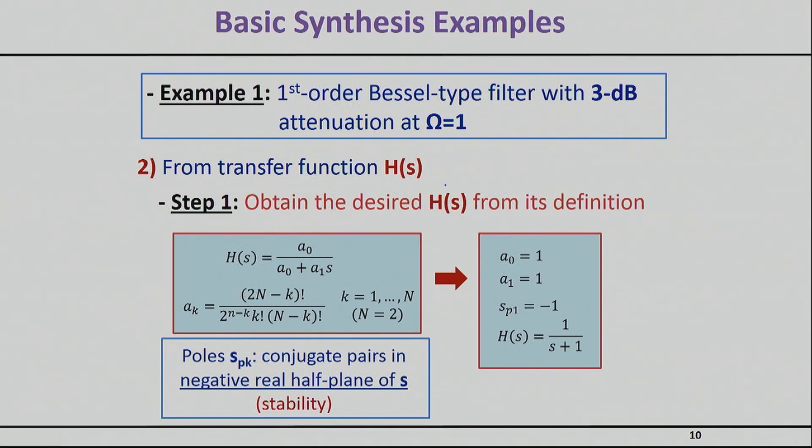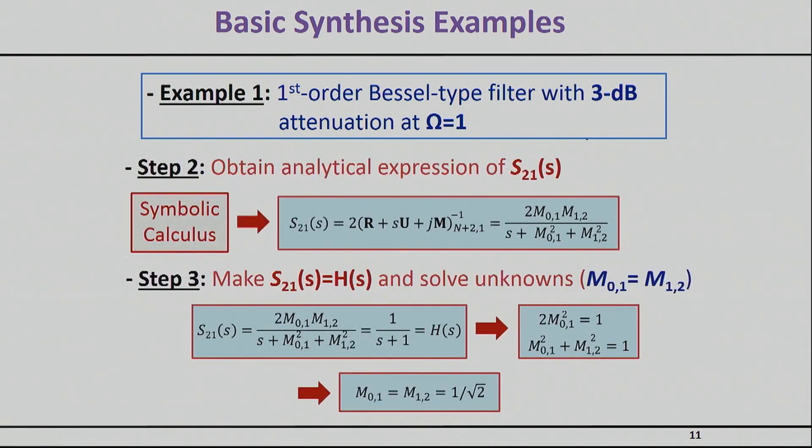Now, in a transfer function case, you basically can calculate the Bessel transfer function, which I'm not going to basically do here. But if you go through the textbooks and you calculate the Bessel transfer function, you will find out that the transfer function is this one, the first order. Of course, you can do this for nth order, but I'm showing you here the first order so we can do the math quickly here together. This essentially has a single pole. The single pole is a negative one, and of course is on the left hand plane as we discussed before to basically ensure stability. So, second step, once I know my transfer function, is to calculate my S21 from the coupling matrix, and here it is.